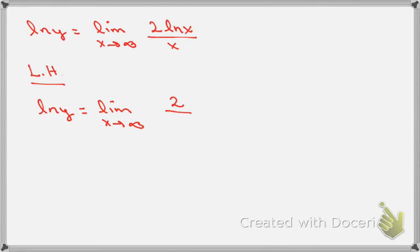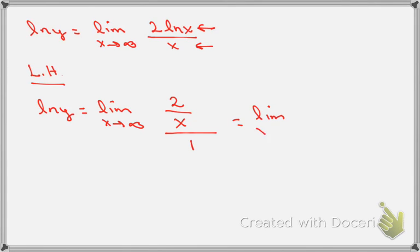Applying L'Hôpital's Rule one more time: the derivative of 2·ln x on top is 2/x, and the derivative of x on the bottom is 1. So this equals the limit as x goes to infinity of 2/x.